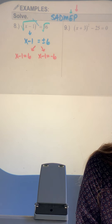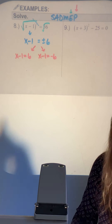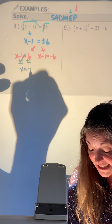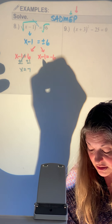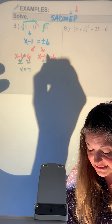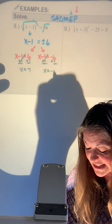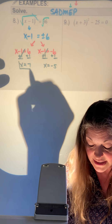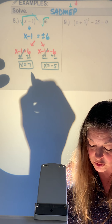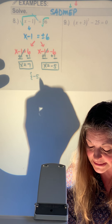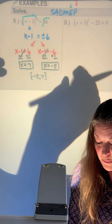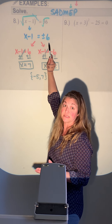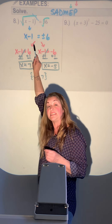Add 1 to both sides of each equation. The first gives x equals positive 7. The second gives x equals negative 5. Notice your answer is not simply plus or minus 6 — there's that extra 1 to take care of.